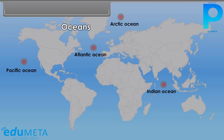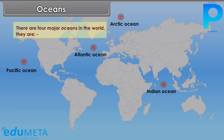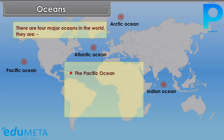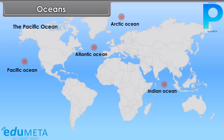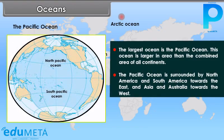There are four major oceans in the world: the Pacific Ocean, the Atlantic Ocean, the Indian Ocean, and the Arctic Ocean. The largest ocean is the Pacific Ocean, which is larger in area than the combined area of all continents. The Pacific Ocean is surrounded by North America and South America towards the east and Asia and Australia towards the west.